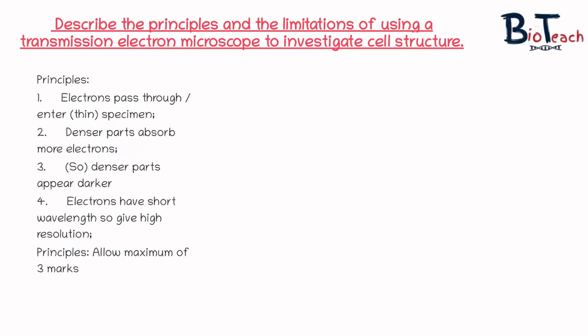Looking at the principles first: the TEM works on the fact that electrons pass through the thin specimen, and because electrons have a shorter wavelength they give a high resolution — that would give you points one to four. Points two and three refer to how the denser parts of your specimen will absorb more electrons and so the denser parts appear thicker. This is a good point to note in your revision notes. Please note that you can only get a maximum of three marks by talking about the principles; the other half of the marks will come from talking about the limitations.